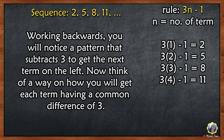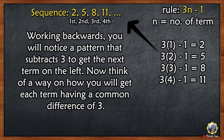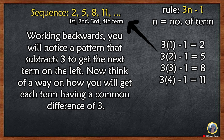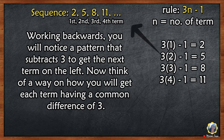Remember that n is the number of term. Change the value of n to the 1st, 2nd, 3rd, and 4th term. 3 times 1 minus 1 is 2, 3 times 2 minus 1 is 5, 3 times 3 minus 1 is 8, and 3 times 4 minus 1 is 11.